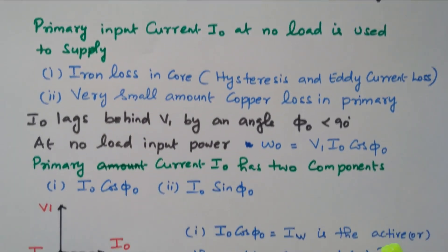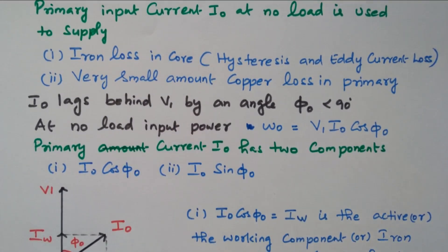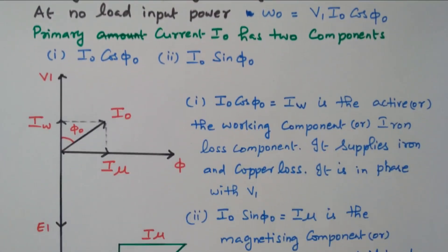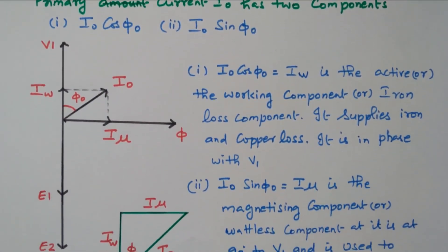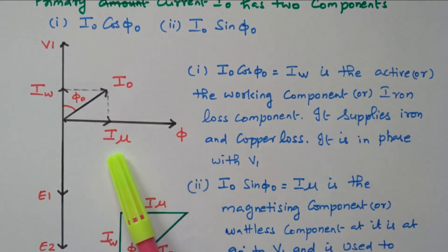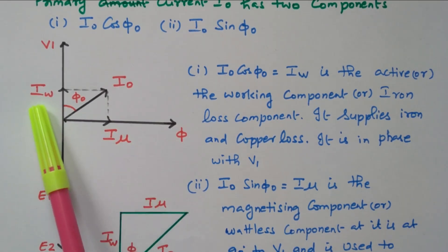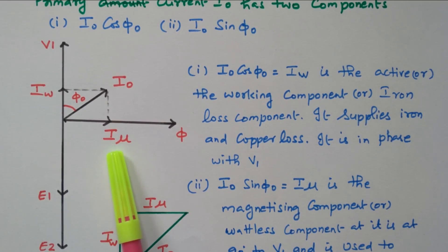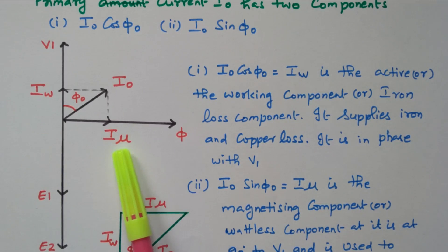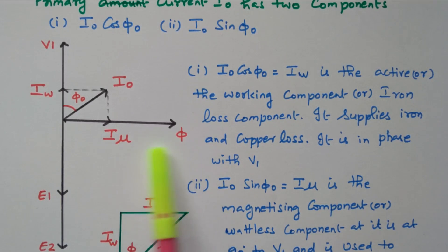Now I0 is split into two components by referring to the vector diagram: I0·cos(phi0) and I0·sin(phi0). Looking at the vector diagram, this is the flux and the magnetizing current. I0 is split into two parts — magnetizing current and working current. The magnetizing current flows due to the flux; due to magnetizing current only the flux is produced, so both are in phase.